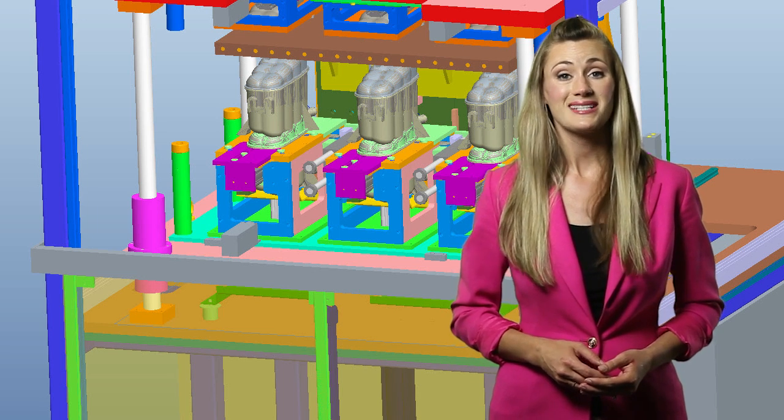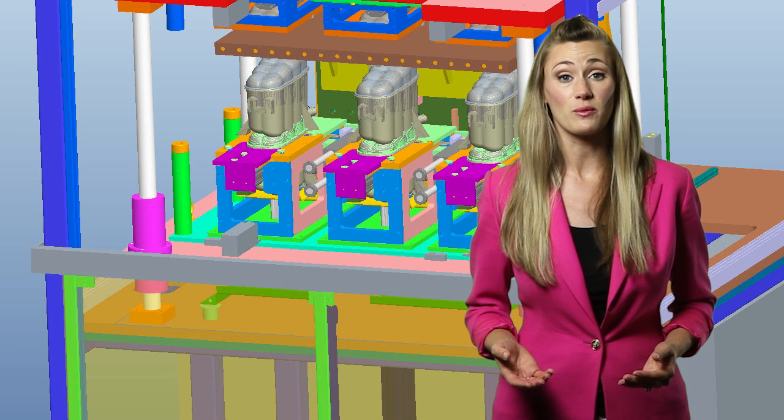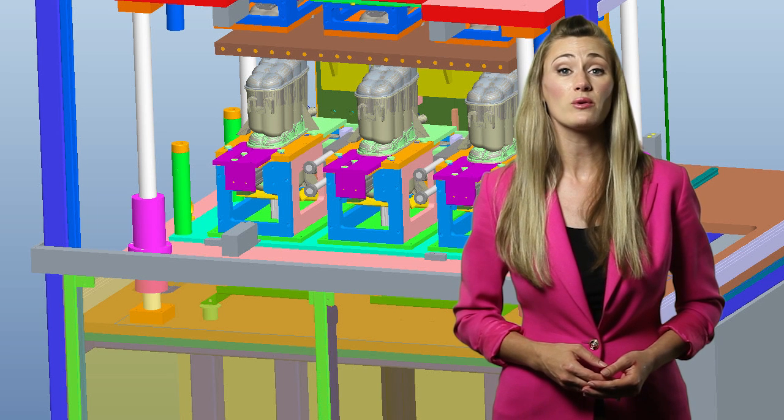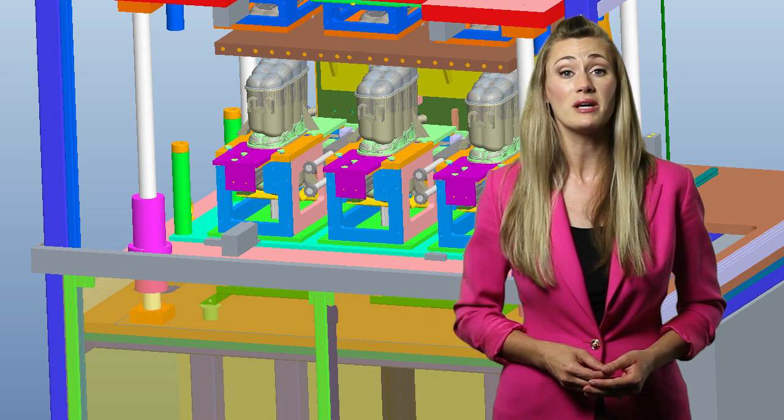All designs change, so assembly lines have to change with them. To design in that flexibility for the reservoir system, the JR Automation engineers made each station a standalone machine that could be rearranged within the line with minimal rework.